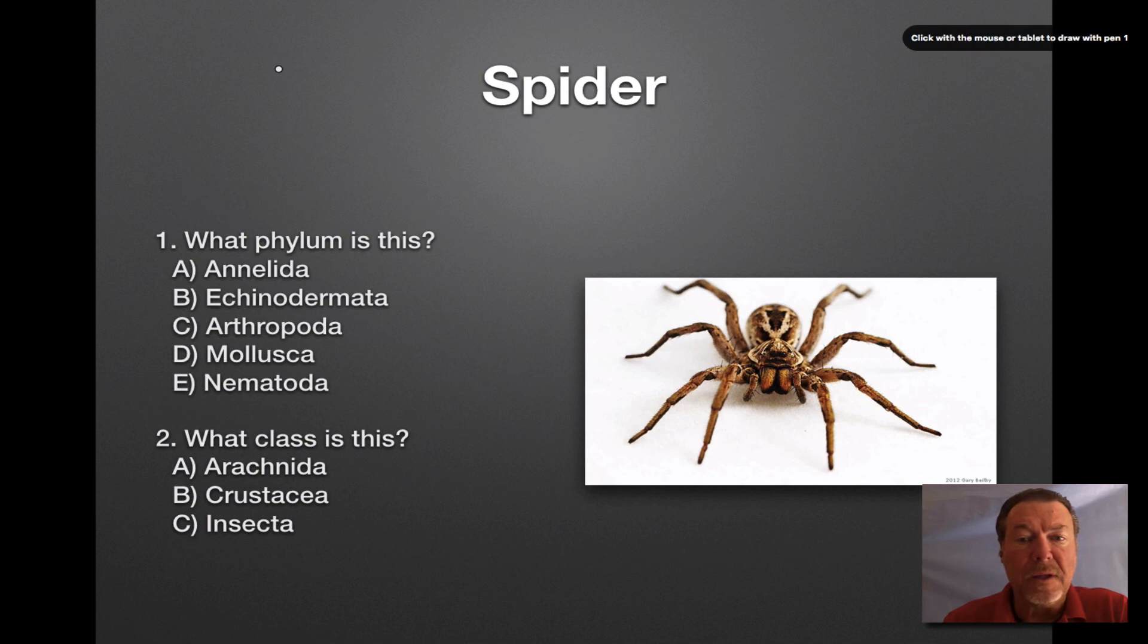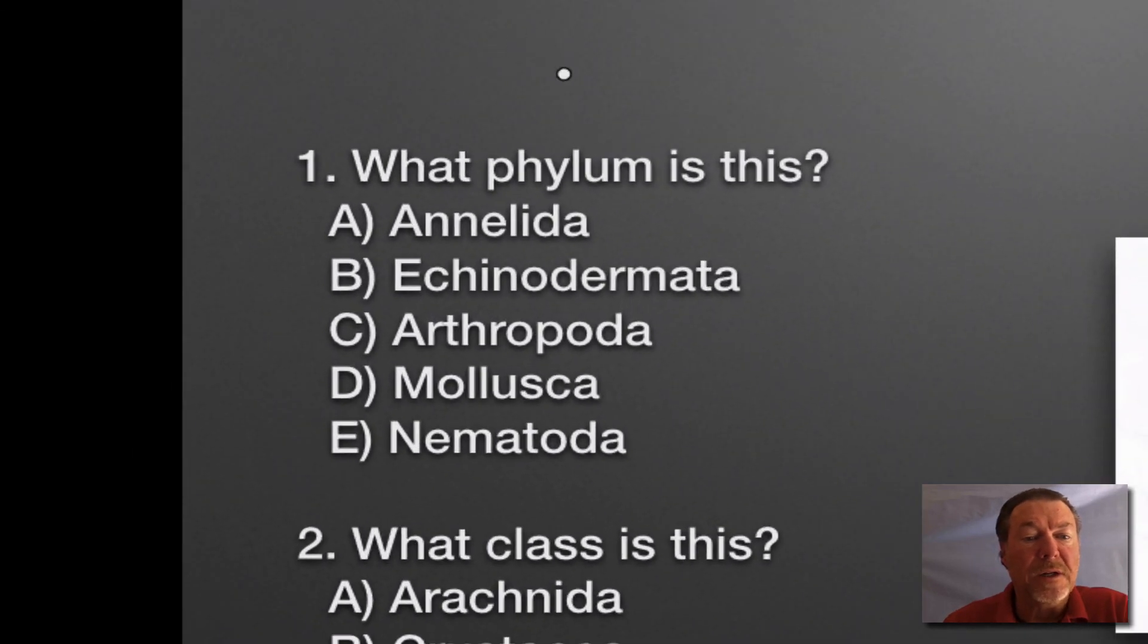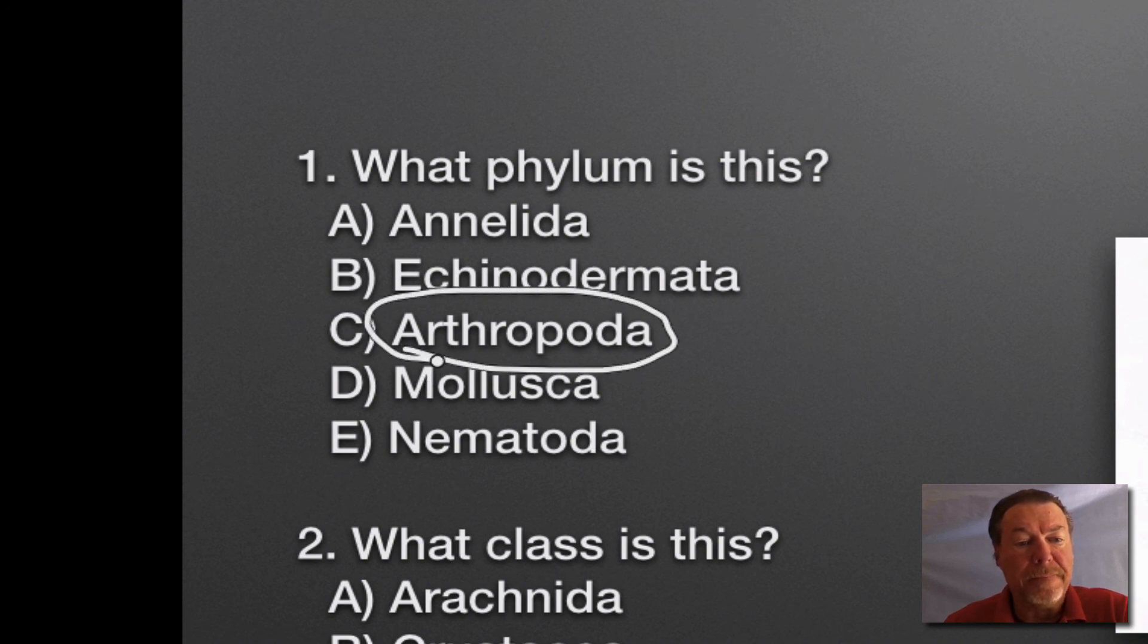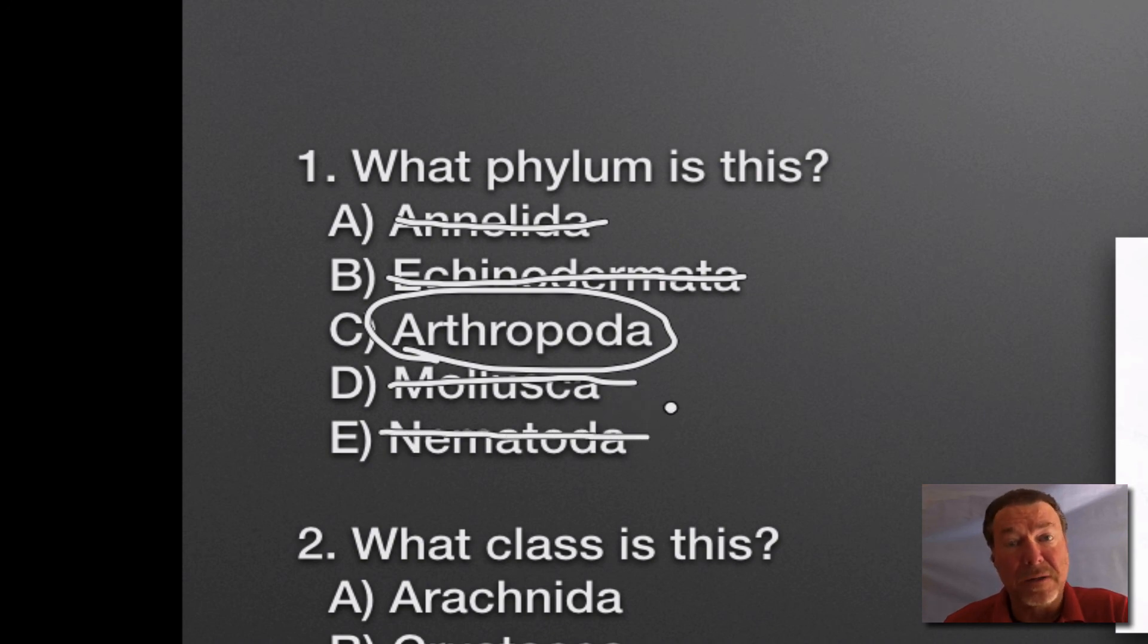The first specimen was a spider. What phylum is this? The answer is arthropod, Kingdom Animalia, phylum Arthropoda. It's not Annelida because annelids are segmented worms like earthworms and leeches. Echinodermata is the spiny-skinned organisms like sea urchins and starfish. Mollusca are clams, snails, squids, and octopus. And Nematoda are roundworms that are not segmented.